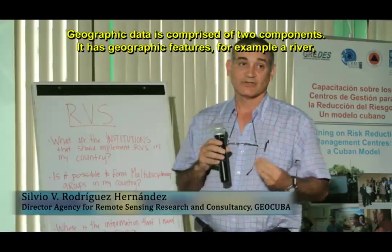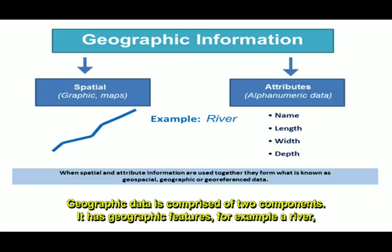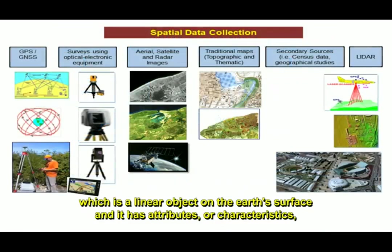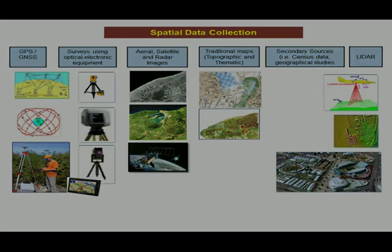Geographic information has a special character. For example, we have a river — it can represent a linear, area, or point feature on the terrain. Geographic information also has attributes and characteristics, which in this case are alphanumeric.